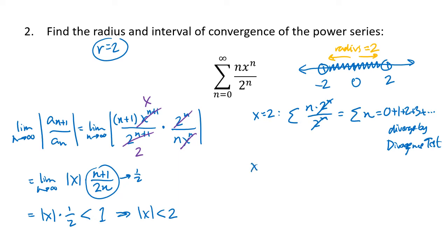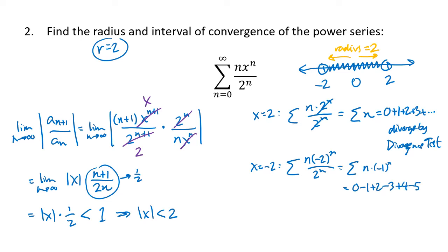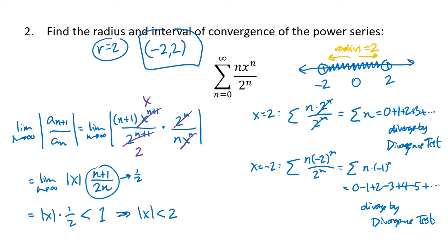For the other endpoint, x equals negative 2, we get the sum of n times (-2) to the n divided by 2 to the n. That simplifies to n times (-1) to the n, giving the series 0, -1, +2, -3, +4, -5, and so on. That also diverges by the test for divergence — those terms are not going to 0. So neither endpoint is included, and our interval of convergence is the open interval (-2, 2).